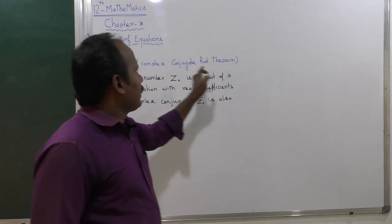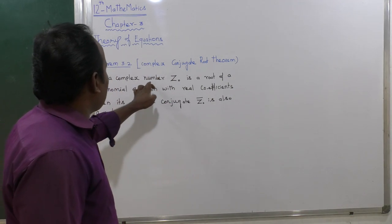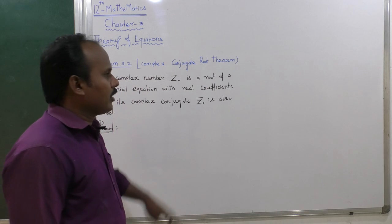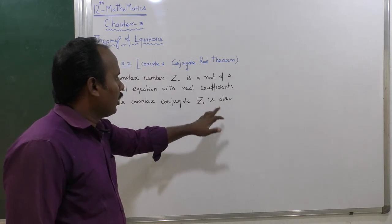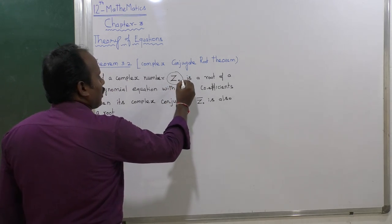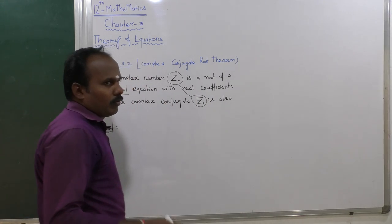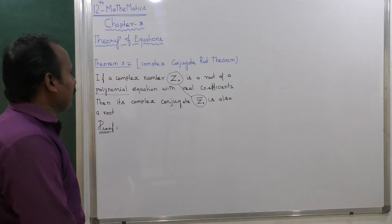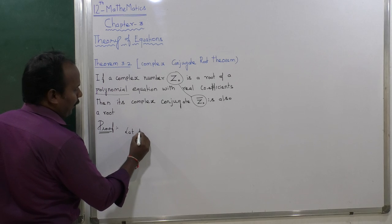Theorem 3.2: Complex Conjugate Root Theorem. The statement is: if a complex number z is a root of a polynomial equation with real coefficients, then its complex conjugate z-bar is also a root. That is the main concept of the complex conjugate root theorem.